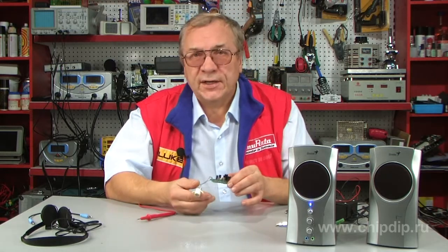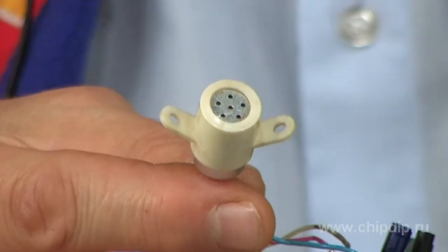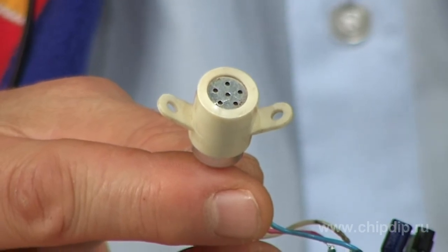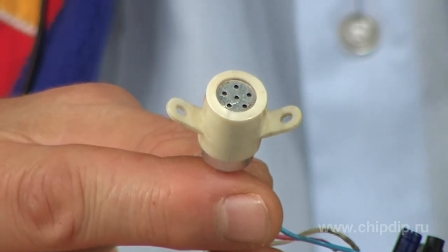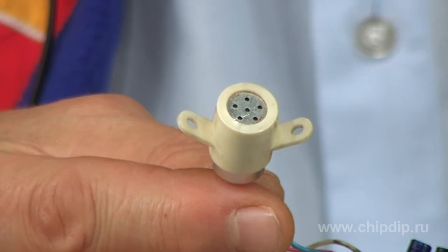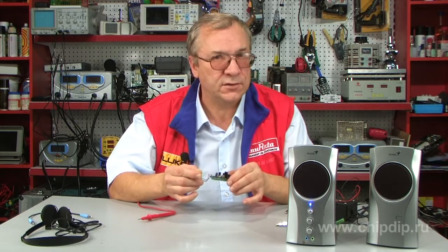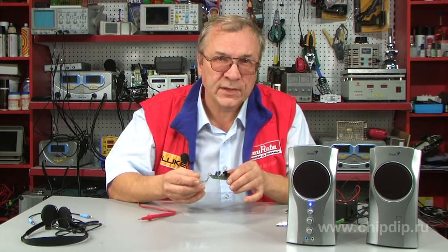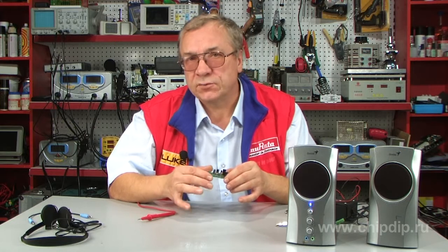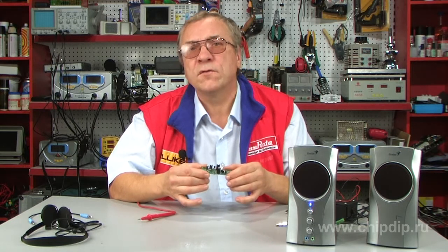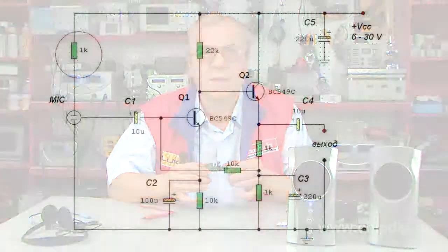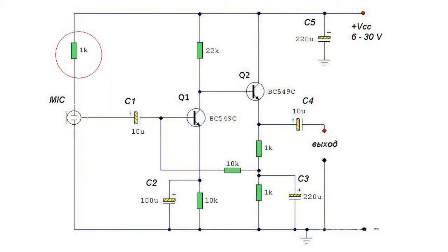The condenser electret microphone, model MKE3 used in this case, contains a sensitive element and a built-in pre-amplifier on a field-effect transistor, requiring supply in the range of 2 to 9 volts. The circuit does not rule out the possibility of using a microphone construction with two outlets. The 1 kOhm resistor limits the current and increases voltage in cases where supply exceeds 12 volts.